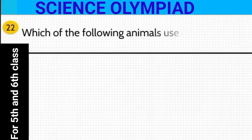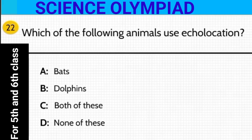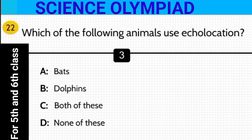Next: which of the following animals use echolocation? Is it bats, dolphins, both of these, or none of these? The answer is both of these — both bats and dolphins use echolocation.